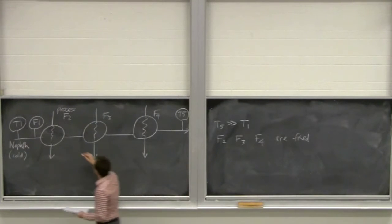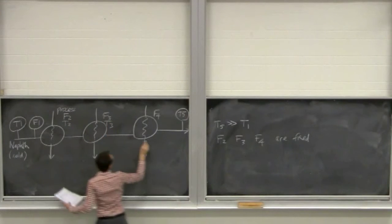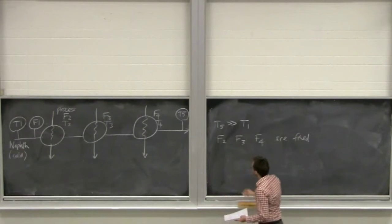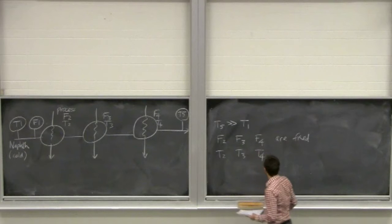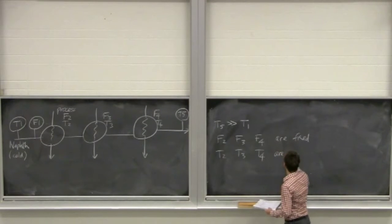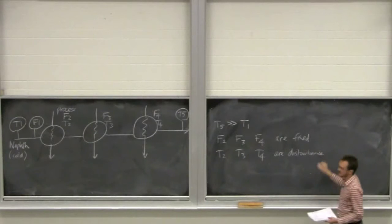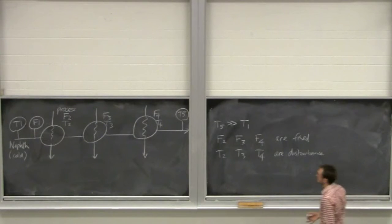Let's give some temperature information here. So we've got T2, T3, T4 from that process stream. T2, T3, T4 are disturbances.